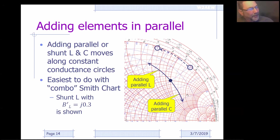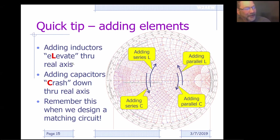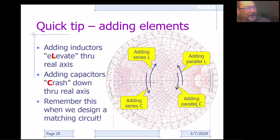Just like when we added in series we followed the red lines, if we're adding in parallel we follow the blue lines. Adding parallel susceptance moves us up along the blue lines; adding parallel capacitance moves us down. We're going to be revisiting this over and over again — this is our first introduction to remembering which direction we're moving.